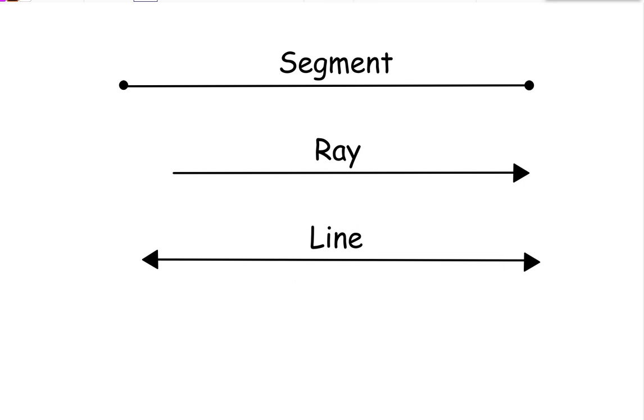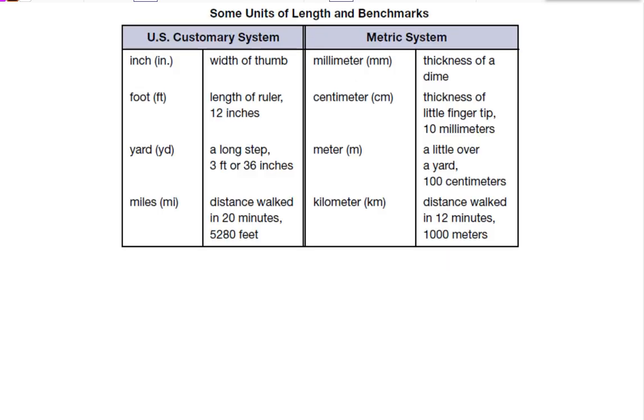When we're measuring something, we tend to measure with segments because they have a sure beginning and end. Now, when we measure, there are two different units that we can use. There's U.S. Customary and there's the metric system.